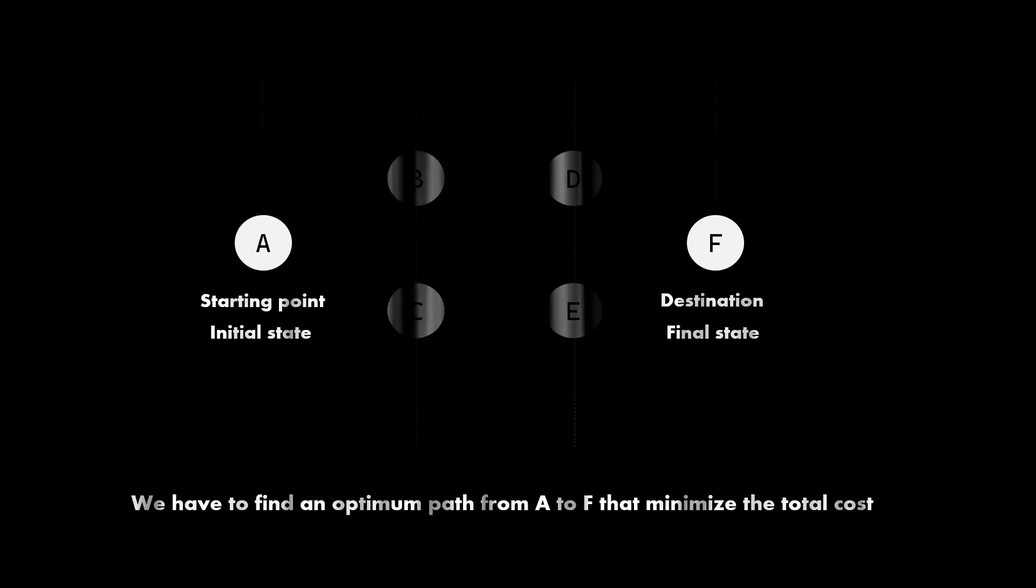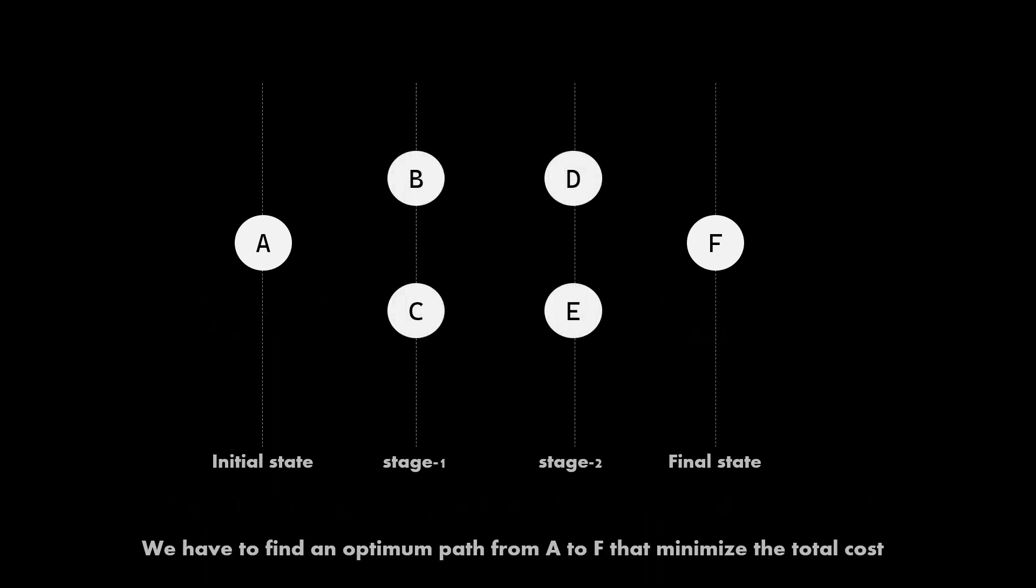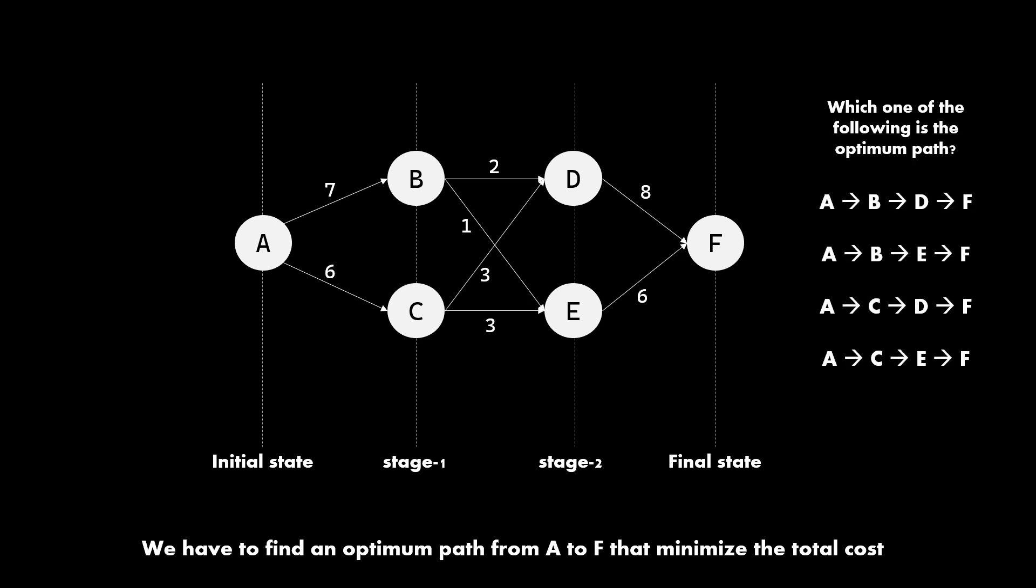Let us start with discussing the algorithm that we will be using. Let's say we want to go from A to F. A is our initial state, F is our final state. Let's say there are two stages to cross to go from A to F. Every transition has a cost, for example the cost of going from A to B is seven. These are the possible paths to go from A to F. Which of these is the most optimum path that has the least cost?